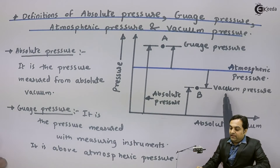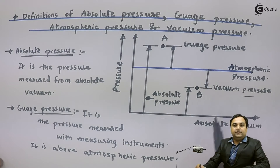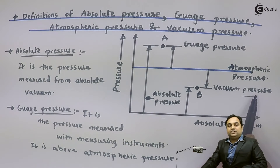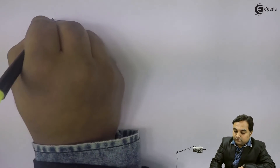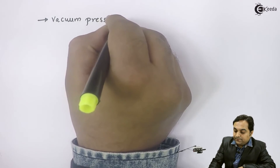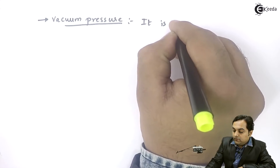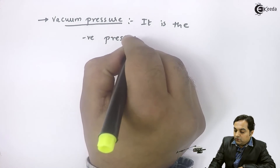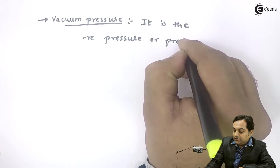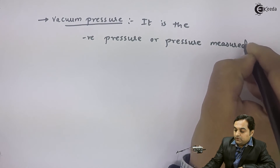Next we have vacuum pressure. Vacuum pressure is a pressure that goes below the atmospheric pressure blue line. It is called vacuum because it is less than atmospheric. Vacuum pressure is the negative pressure, or pressure measured below atmospheric pressure.